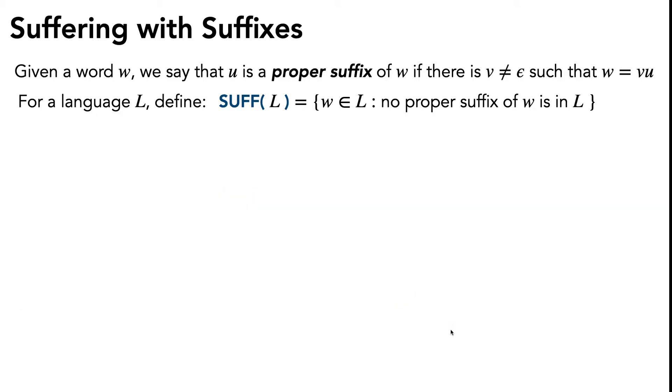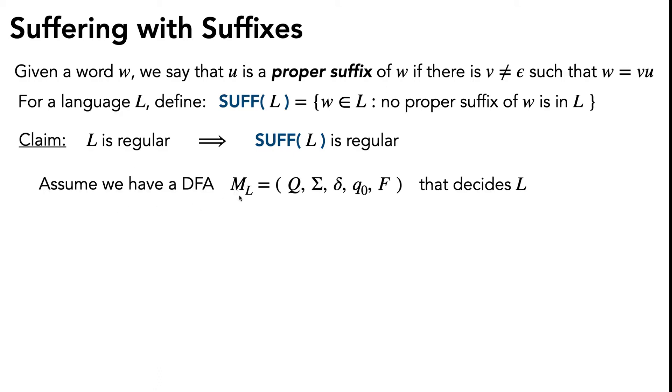With those definitions out of the way, let's get to our claim. Our claim is that if the original language L is regular, then SUFF(L) should also be regular. In other words, if we assume L is regular, we assume that we've got a DFA M_L defined by a 5-tuple that decides it, then we should be able to create a DFA M_S defined by its own 5-tuple to decide SUFF(L).